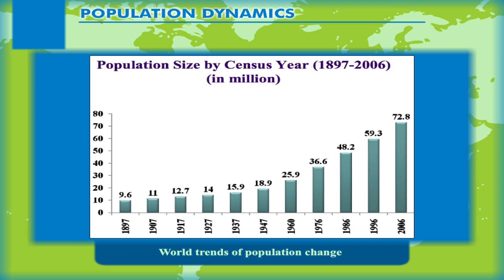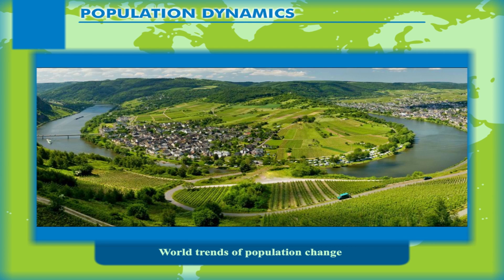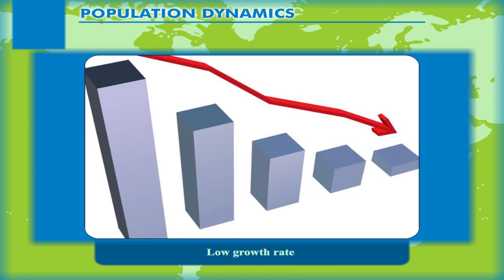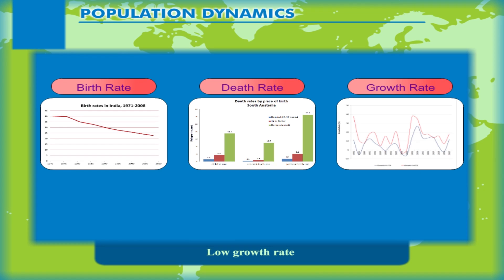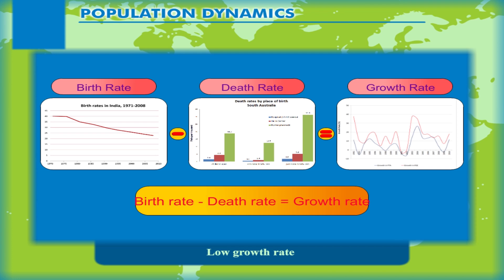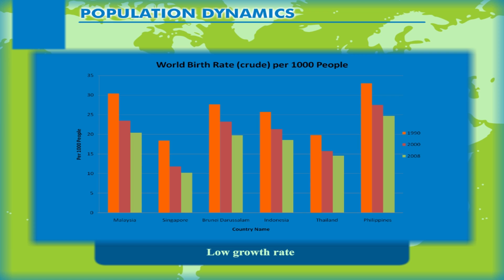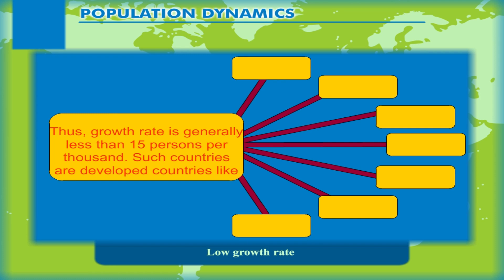It all changed when people started leading a settled life. As they inhabited river valleys, agriculture developed and there was a steady growth of population. The reason for this change was the change in birth rate — the number of births per thousand people — and the death rate — the number of deaths per thousand people. The growth rate is the difference between the birth rate and the death rate. The developed countries of the world have low birth rate and low death rate due to advanced medical facilities. Thus, growth rate is generally less than 15 persons per thousand.